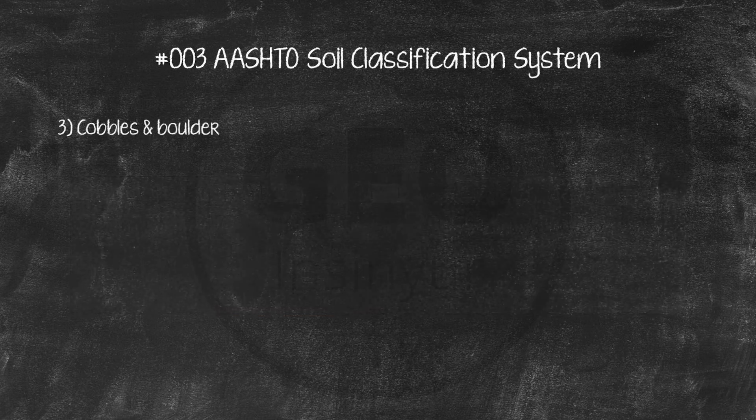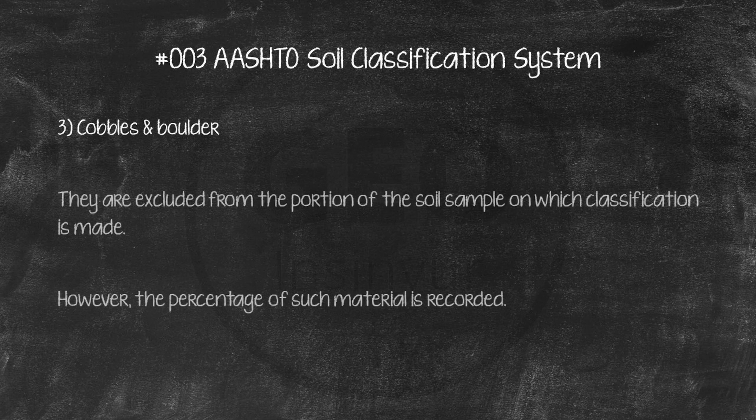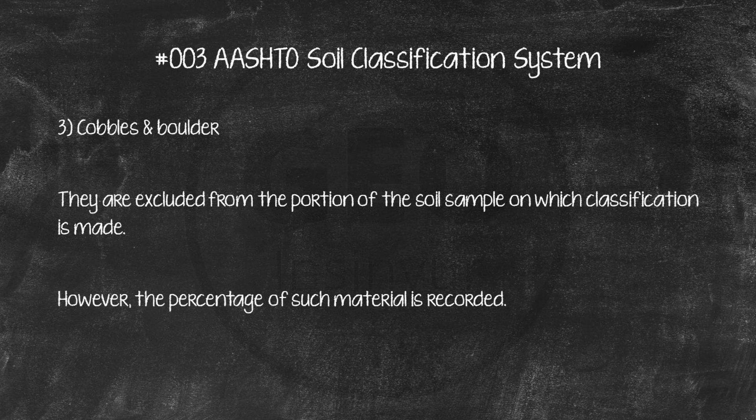3. If cobbles and boulders, size larger than 75mm, are encountered, they are excluded from the portion of the soil sample on which classification is made. However, the percentage of such material is recorded.